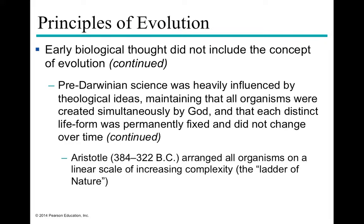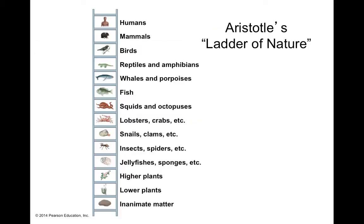Moving forward in time, Aristotle arranged organisms in what he called the ladder of nature — a linear scale of increasing complexity. He did get some things right, placing higher-order beings at the top and lower-order beings at the bottom. However, he included inanimate matter, which doesn't evolve, and arranged life as a ladder rather than a tree, potentially compiling different lineages together. Still, he began to understand lower and higher orders of being.